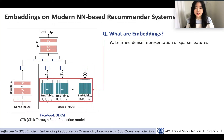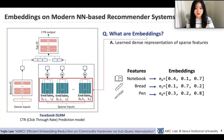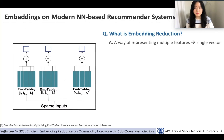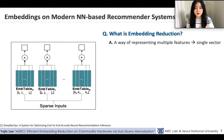To avoid such difficulty, most recommender models including DLRM utilize embeddings as shown in the figure. Embeddings are a learned dense representation of sparse features, and multiple embedding vectors are stored in an embedding table. For Kathy's previously browsed items — notebook, bread, and pen — each is mapped to a dense embedding vector. To collectively represent multiple items the user has recently browsed, most recommender models perform an embedding reduction operation, where embedding vectors are fetched from the embedding table and then reduced. The summation shown in the figure is the most popular choice for Facebook's DLRM model.